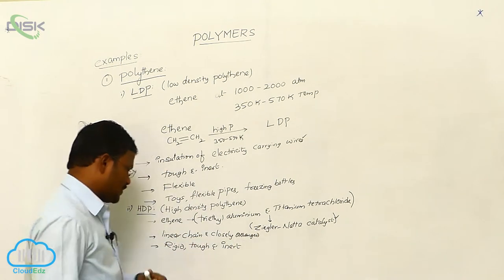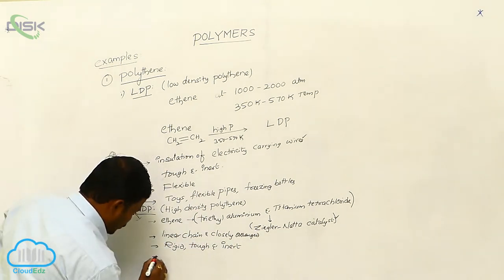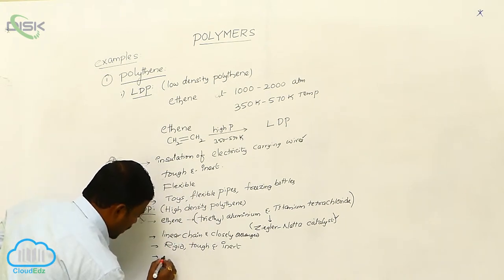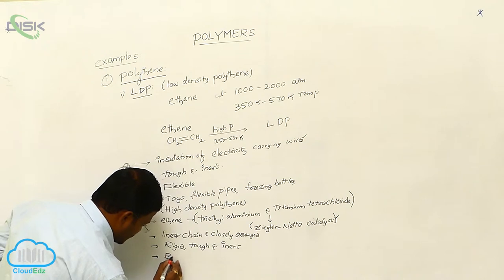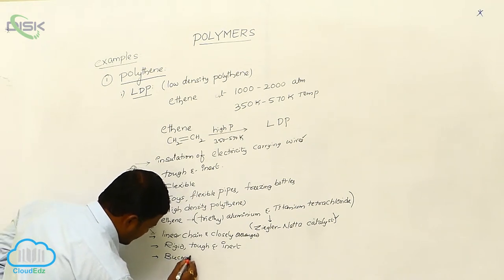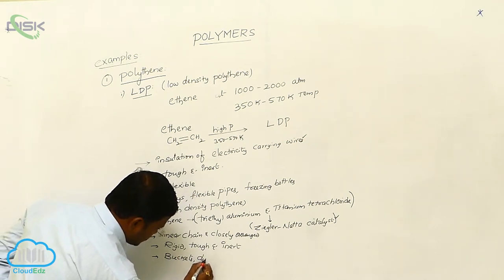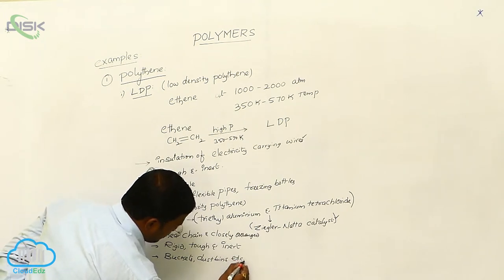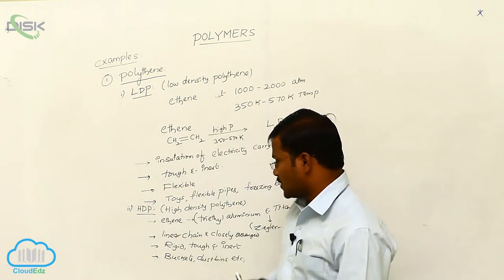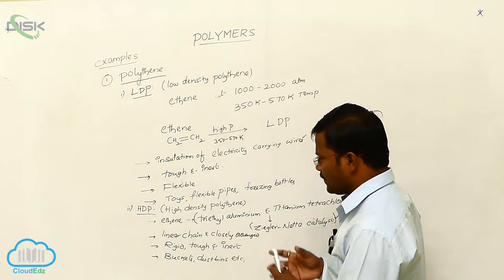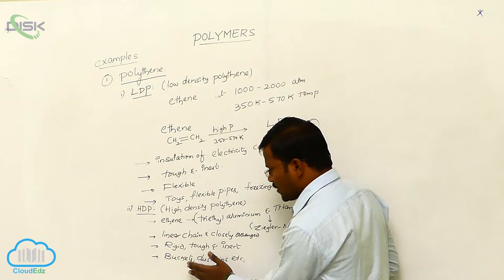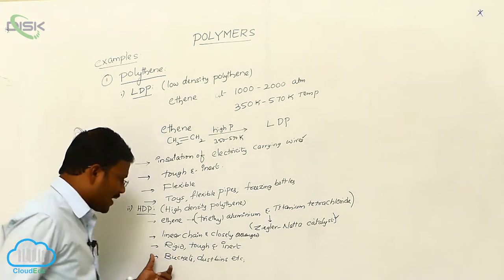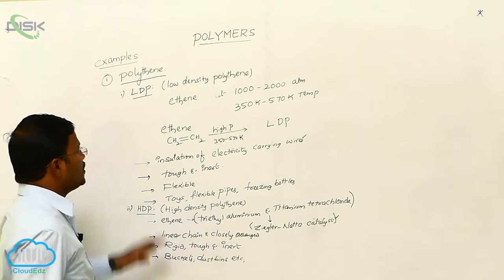Due to the toughness of high-density polymers, they are used to prepare buckets, dustbins, etc. So, due to their rigid character and toughness, high-density polymers are used in the preparation of buckets, dustbins, etc.